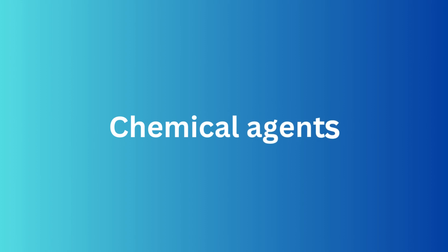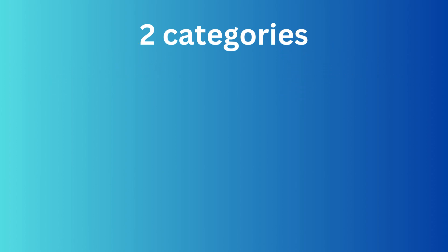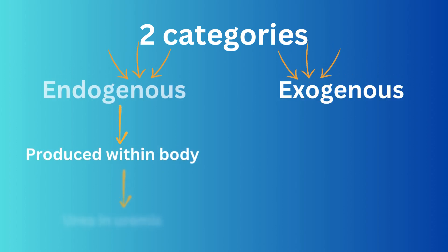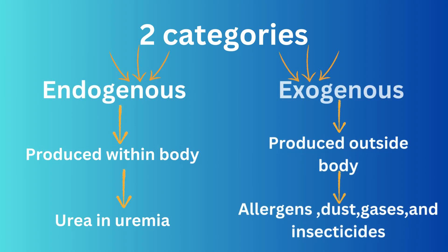Next, chemical agents. Chemical agents are divided into two categories: endogenous and exogenous. Endogenous chemicals are produced inside the body, like urea and uremia. Exogenous chemicals come from outside, like allergens, dust, gases, and insecticides.